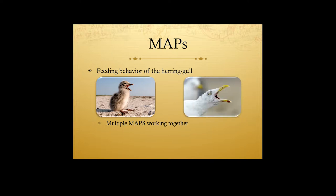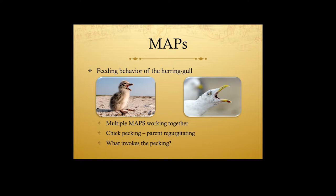Here's an example: the feeding behavior of a herring gull. There's a little chick and a parent gull. Notice the red dot on the parent bird's beak. The chick sees that red dot and a modal action pattern activates — the chick comes up and pecks that red dot. When the parent gull receives that pecking on the dot, it triggers a MAP in the parent, causing it to regurgitate food back to the chick. So you've got two MAPs working together.